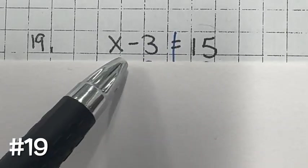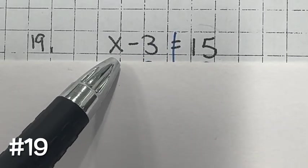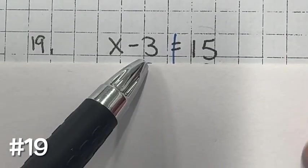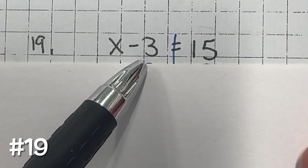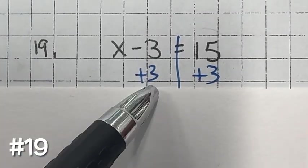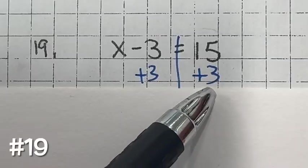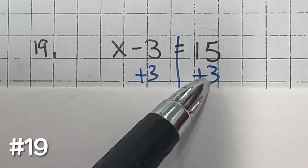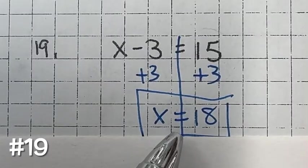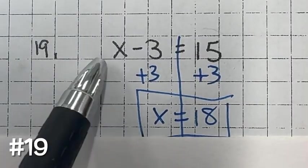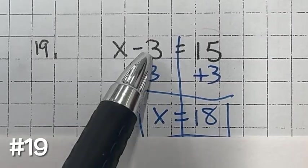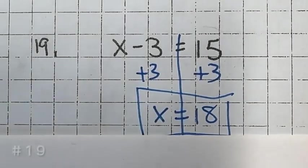Number 19: solve this equation to get x by itself. We have x minus 3, so the inverse of subtraction is addition — add 3 to both sides to create a zero pair. Then 15 plus 3 is 18, so x equals 18. Check: 18 minus 3 does equal 15.